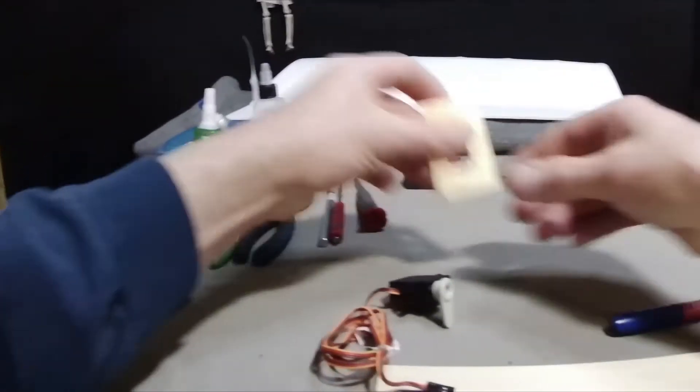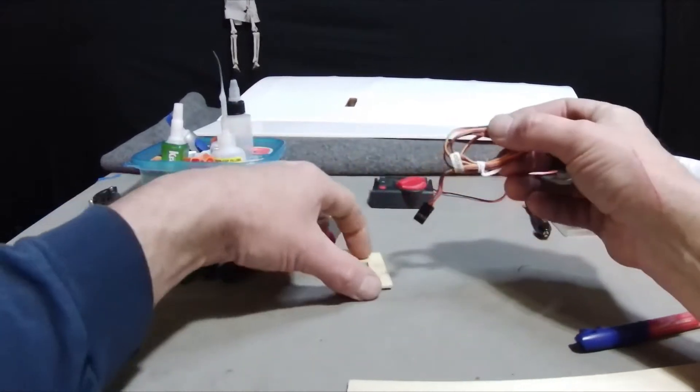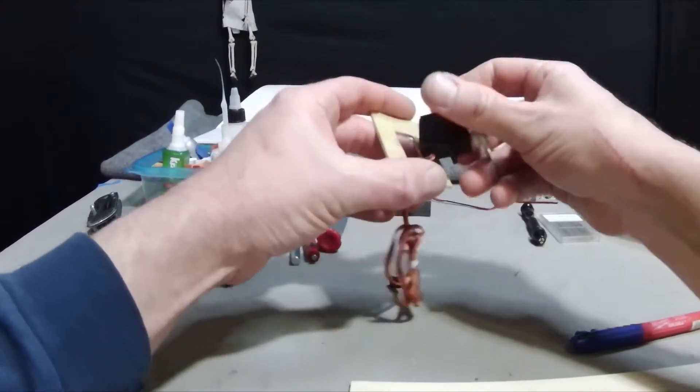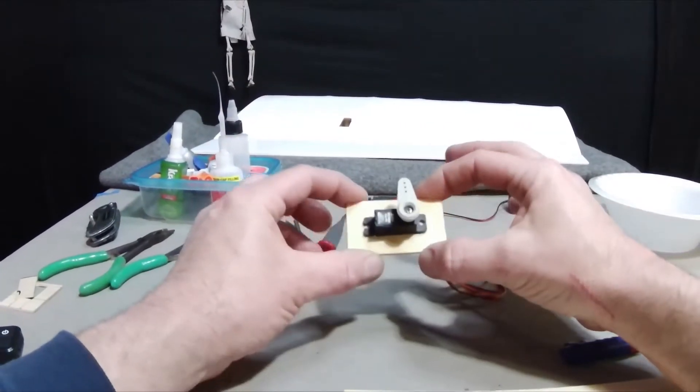So we made a plate out of wood that the servo will fit into, and then we'll mount this entire plate to the wing.